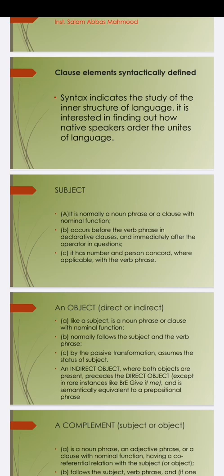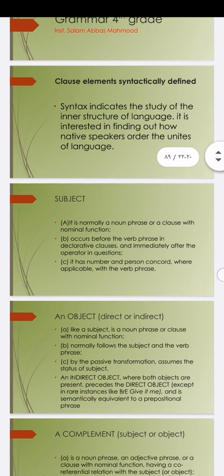The second point is number and person concord. When we reach the topic of concord, there must be agreement in number and person. For example, 'she' — the verb must be singular. 'You' — the verb must be plural. There is also gender concord, for example 'he' — we say 'himself', 'her' — 'herself'.